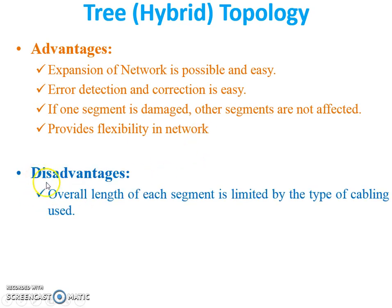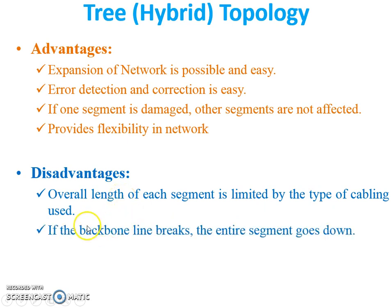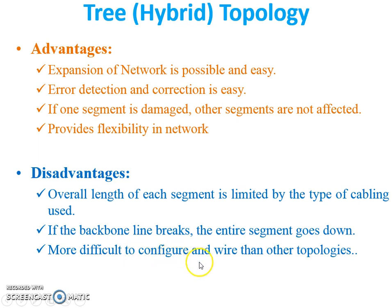Disadvantages: First, the overall length of each segment is limited by the type of cabling used, so maximum cabling is required in this topology. Second, if the backbone line breaks — the main bus to which all star networks are connected — the entire segment goes down; if the main bus is down, all topologies will be down. Third, it is more difficult to configure and wire than other topologies — configuration is more difficult compared to other topologies.